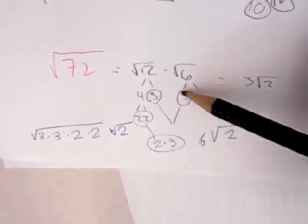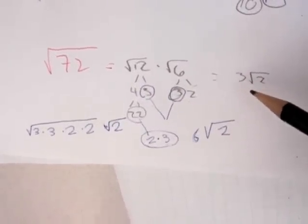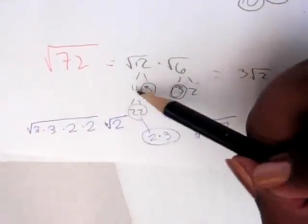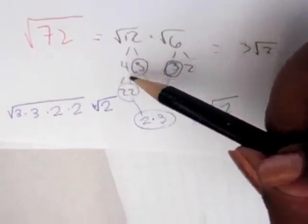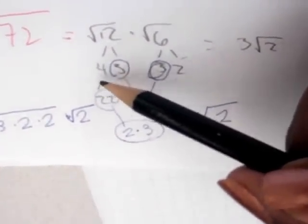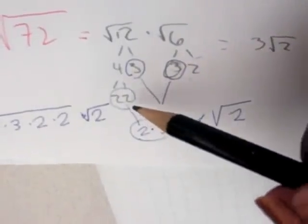So, therefore, we know 3 would be outside of the square root. Now, we notice over here is a 4. What makes 4? Because that could be broken down. 4 could be broken down into 2, 2.